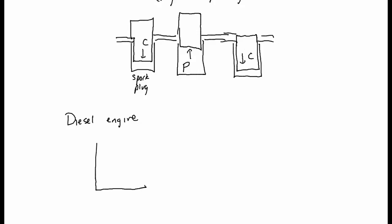A diesel engine works a little differently. The cycle looks a little different, but that's not really the important part. The cycle has a compression step, which is again an adiabat, and the ignition stage where we keep the pressure constant and allow the volume to change. Then you've got the power stroke, and the exhaust is at constant volume.